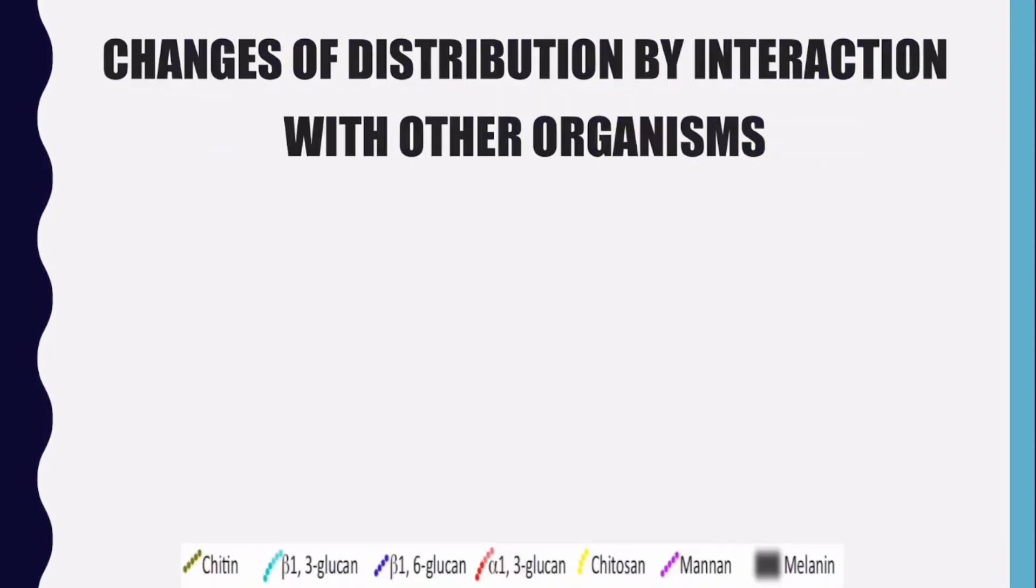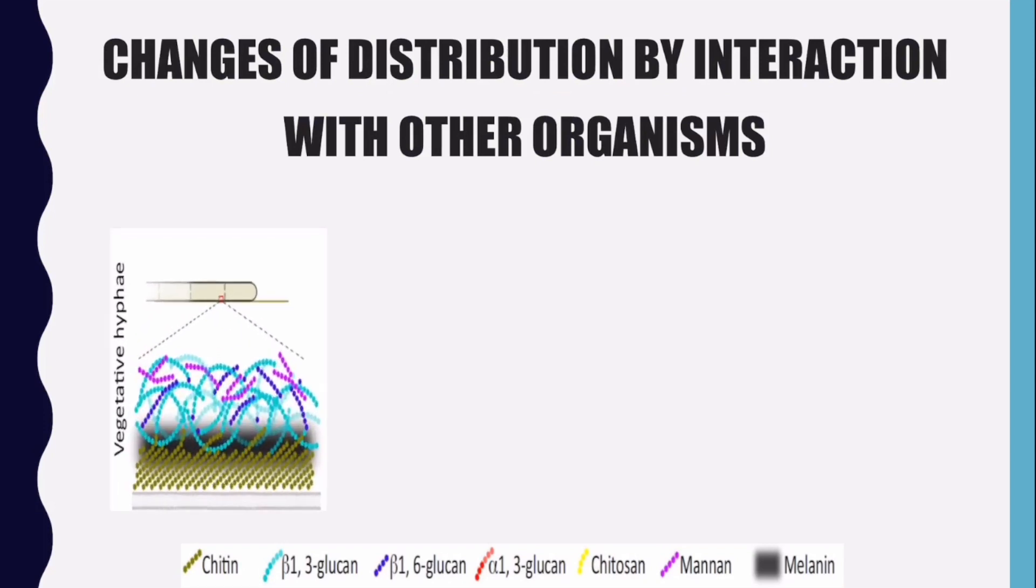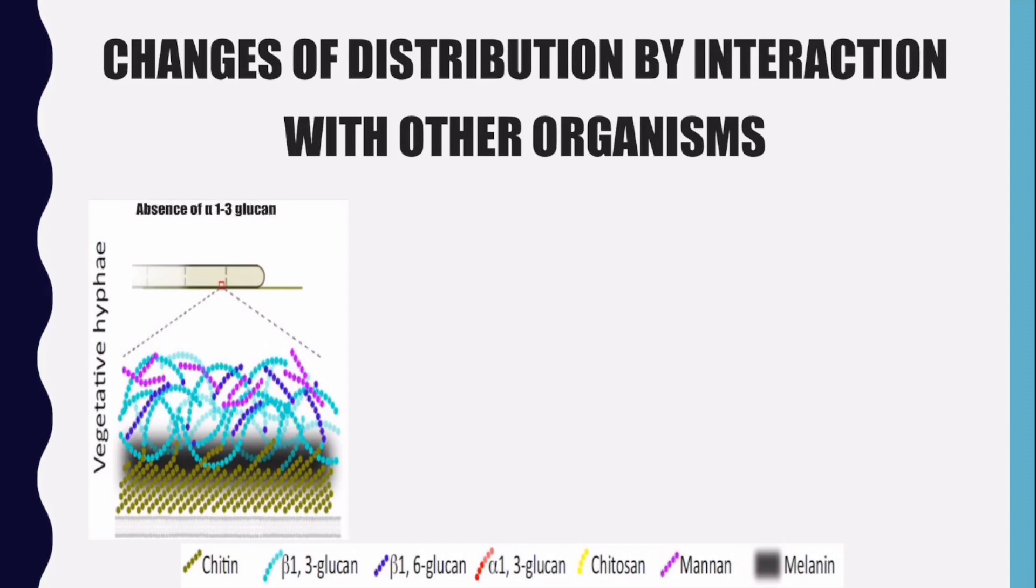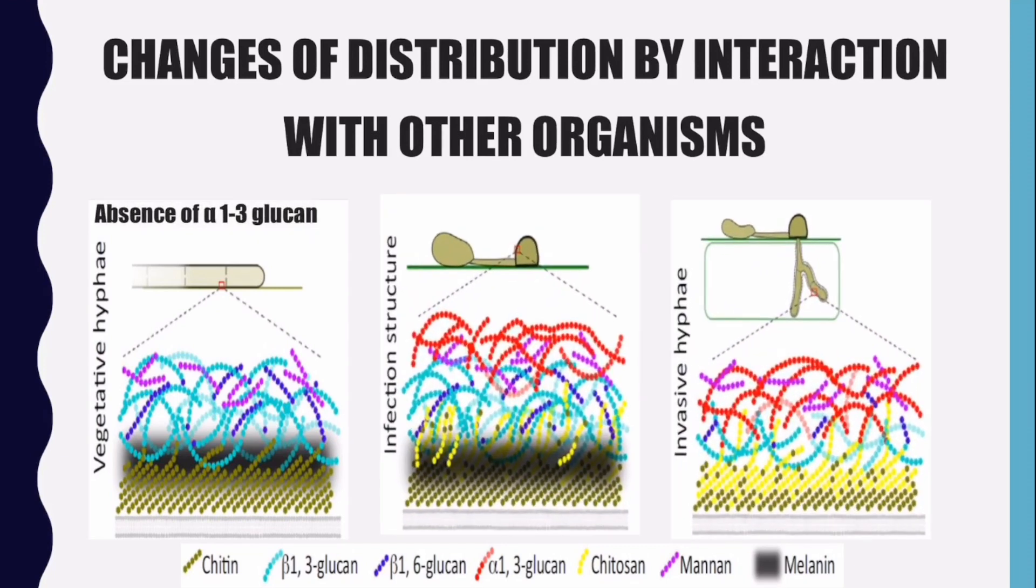Also, depending on the environment that the fungus is in, the composition of the cell wall can change. For example, vegetative hyphae have no alpha-1,3-glucan, a noticeable component of colonizing structures of fungi.